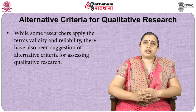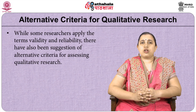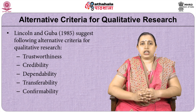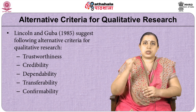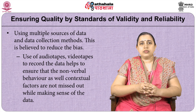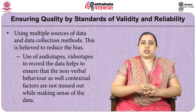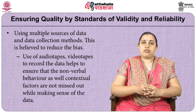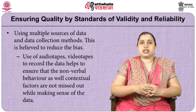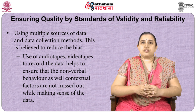What are the alternative criteria for qualitative research? While some researchers apply the terms validity and reliability, there have also been suggestions of alternative criteria for assessing qualitative research. Lincoln and Guba, for instance, suggest the following alternative criteria: trustworthiness, credibility, dependability, transferability and confirmability. Using multiple sources of data and data collection methods is also one way of ensuring quality by ensuring certain standards of validity and reliability. This is believed to reduce bias.